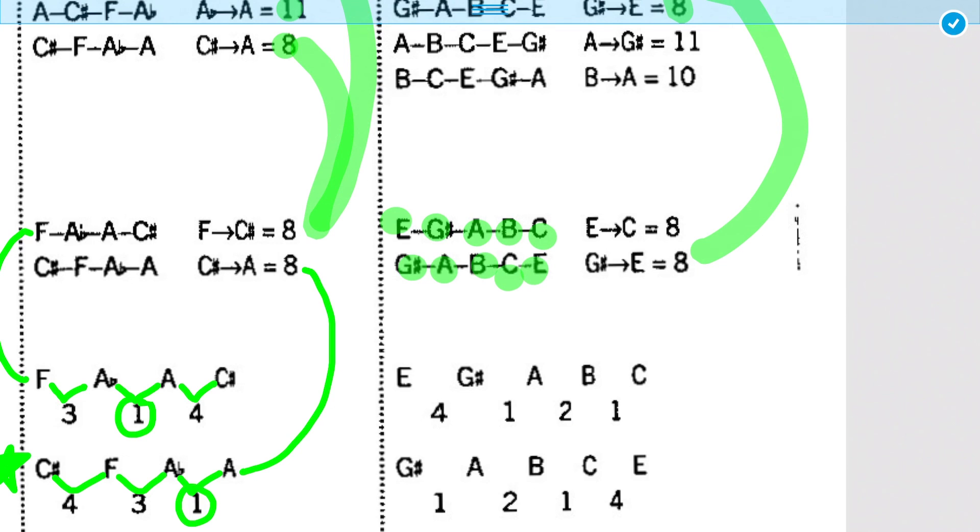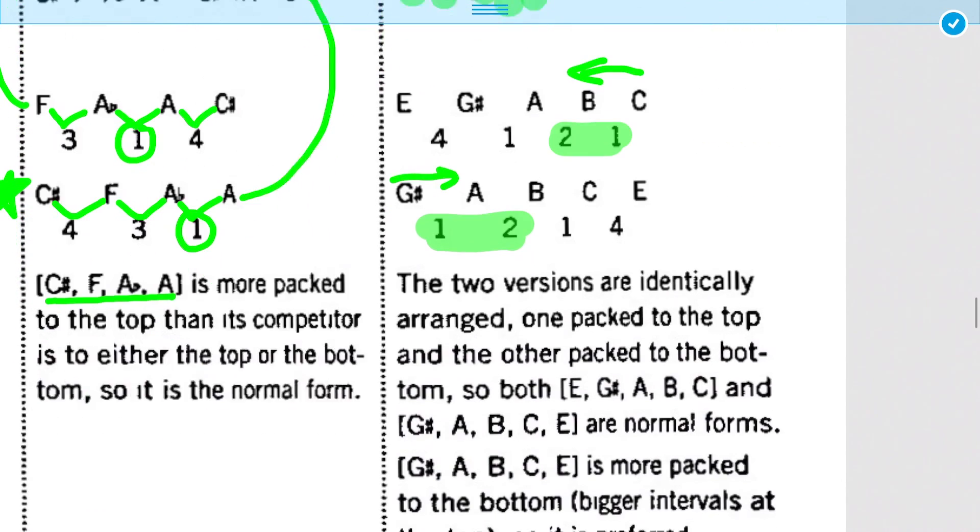Okay, so, in this form, we have 2, 1 to one side, and in the second form, we have 1, 2 to the other side. So, for both directions, they're equally compact. 1, 2, 1, 4, and 1, 2, 1, 4. We can't decide which one is more compact.